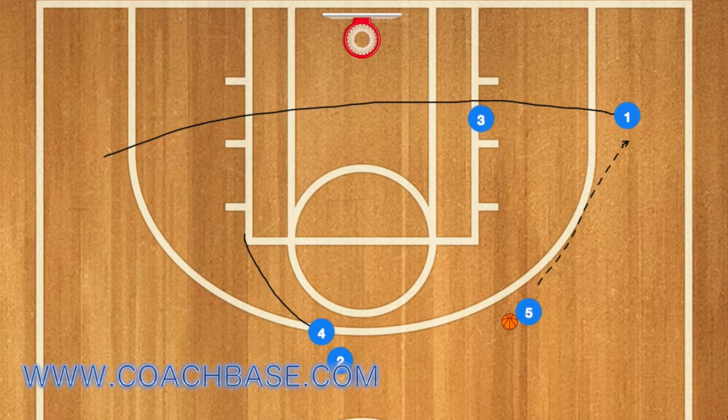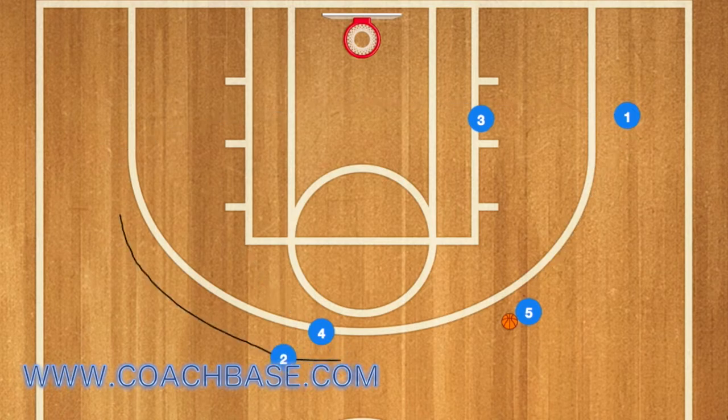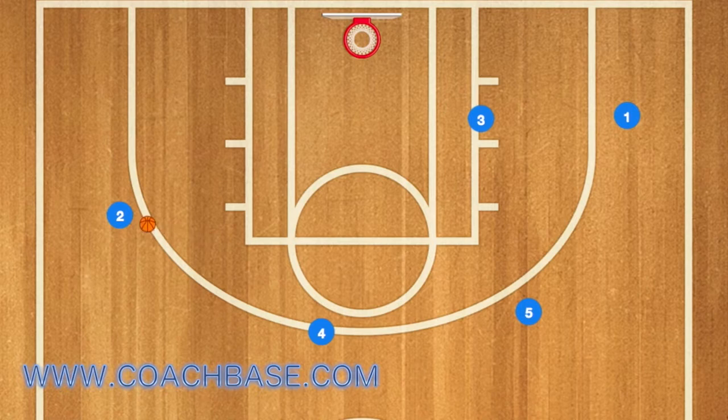At this time, 5 can either pass to player 1, or he can wait for 2 to use 4 as a screen, and pass to player 2, which is a skip pass, and player 2 should be wide open for the 3-point shot.